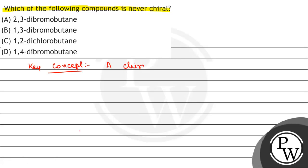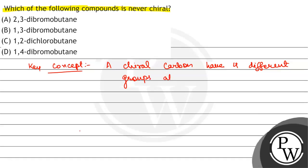Chiral carbon के पास क्या होते हैं? जो carbon के पास four different groups attached to it होते हैं। Chiral carbon से जो भी groups attached होते हैं, चारों के चारों groups different होते हैं, ठीक है?